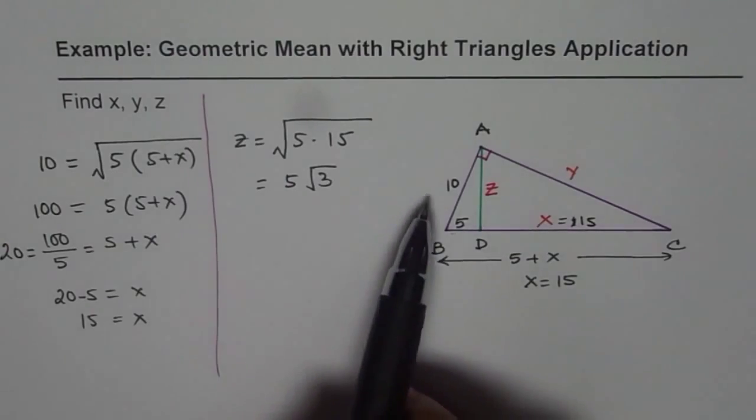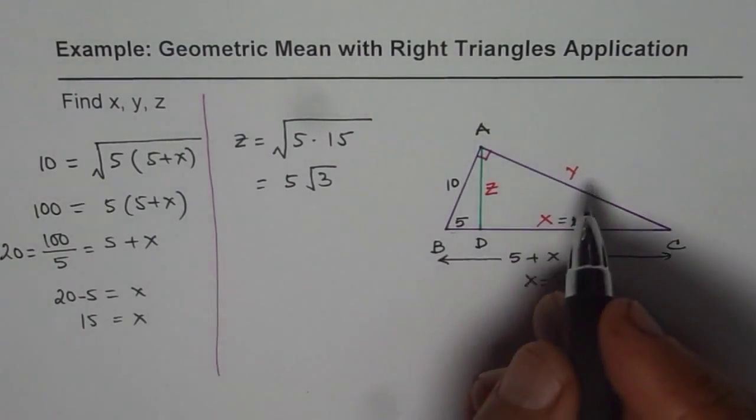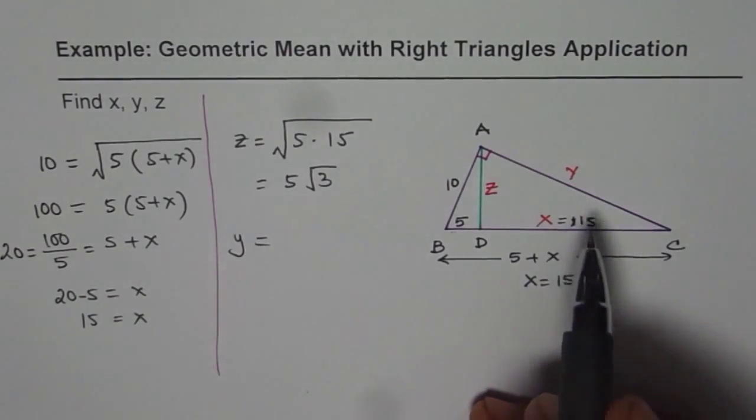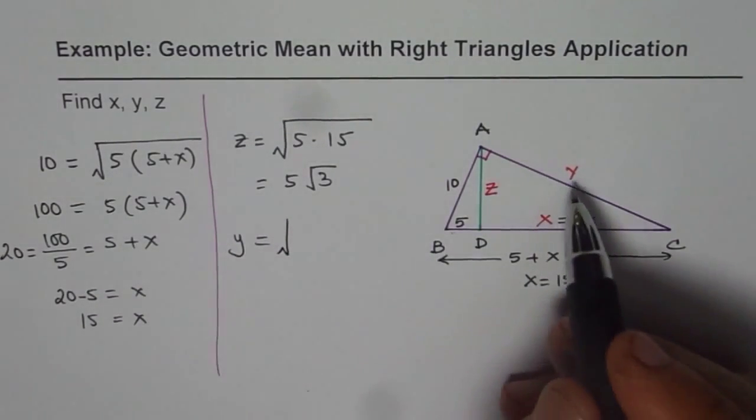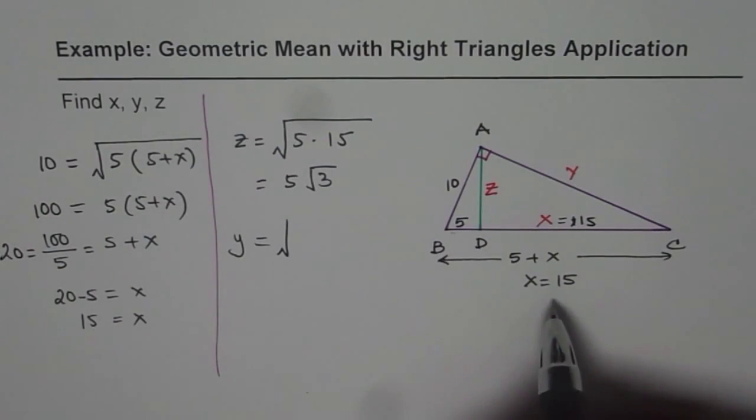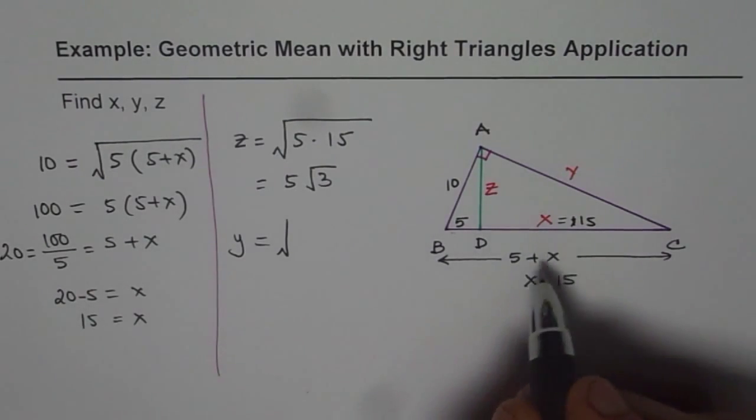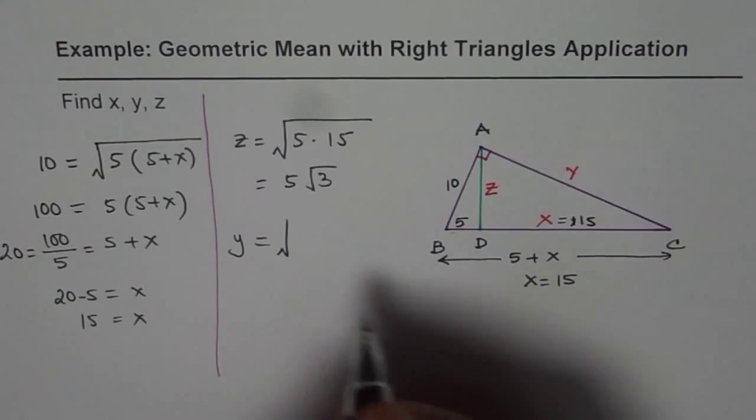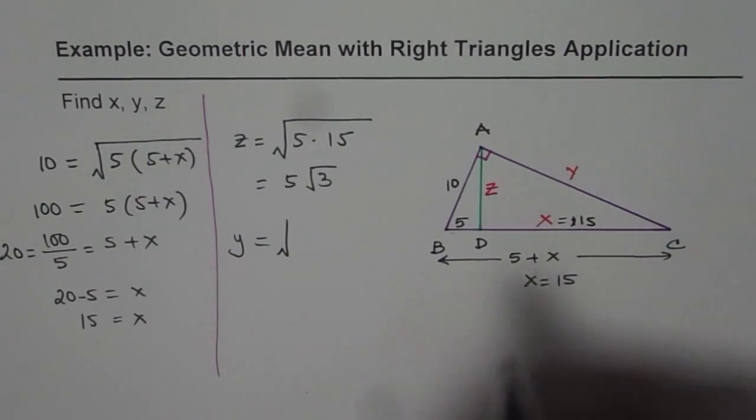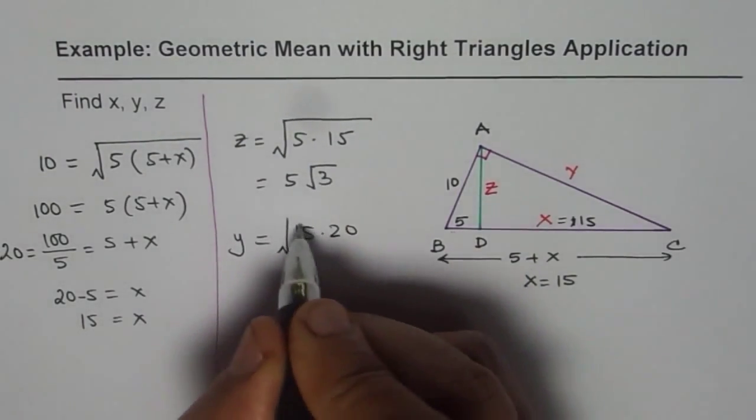And for y we can apply the leg theorem. Y will be equal to, just as we started with, square root of the geometric mean of the hypotenuse and the adjacent side. So the hypotenuse in our case is 20, 5 plus 15 that is 20. And the adjacent side is 15, so we'll have 15 times 20 here.